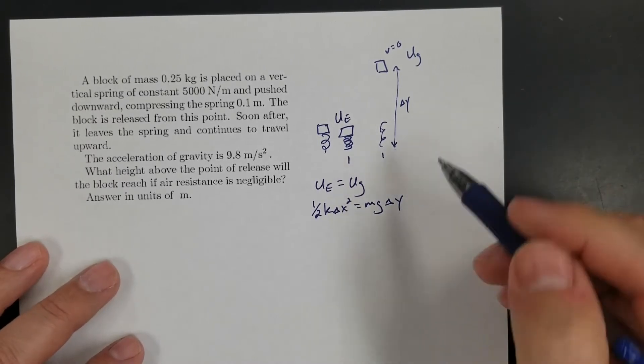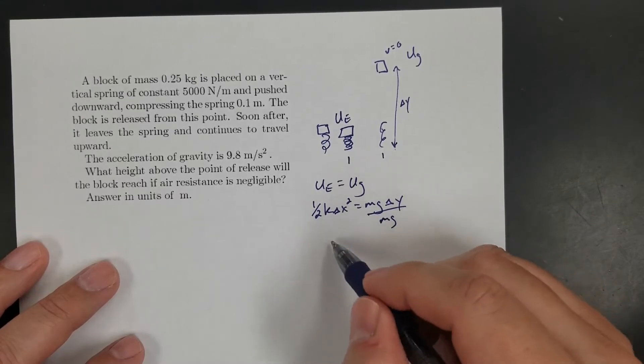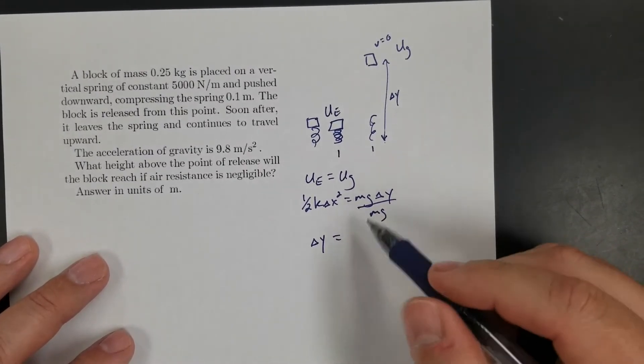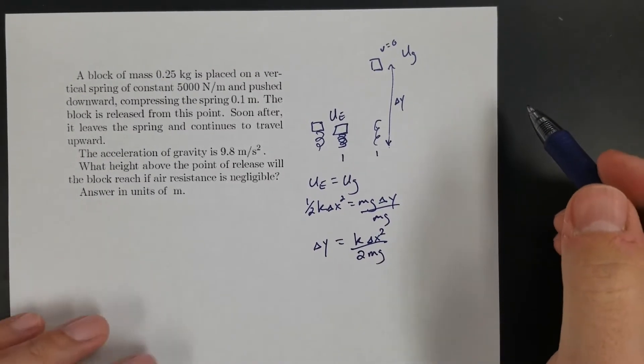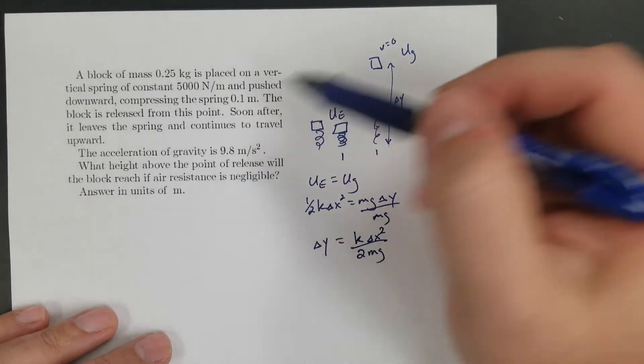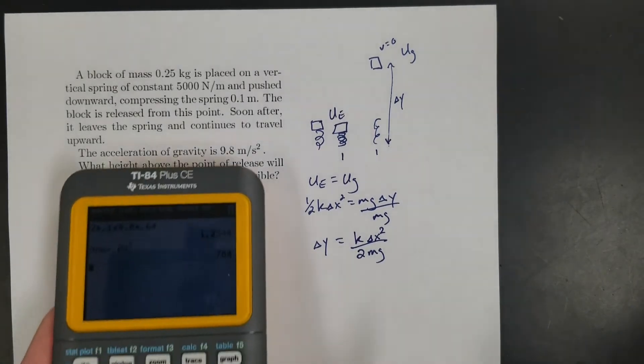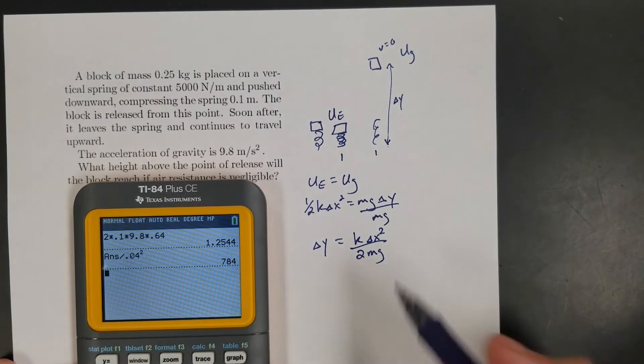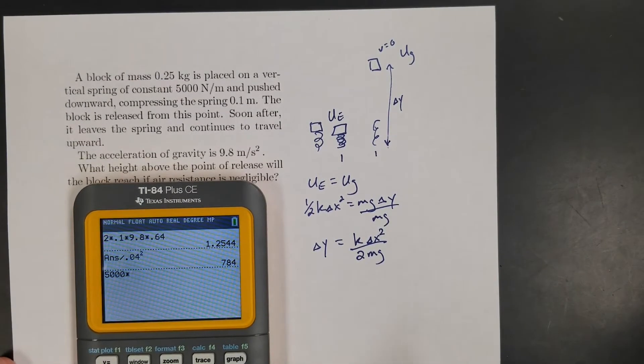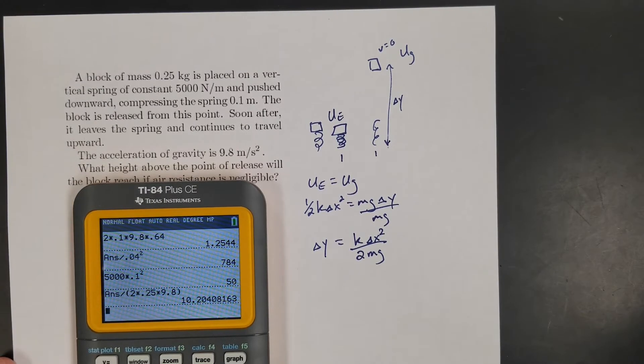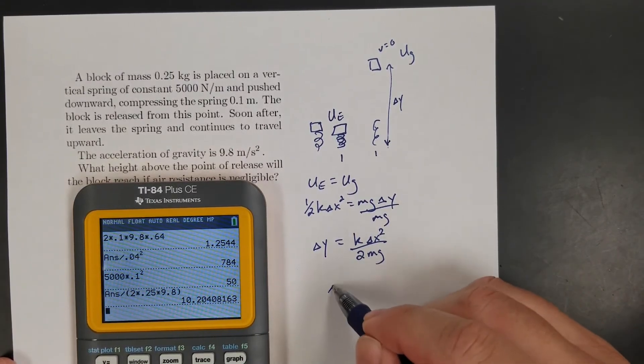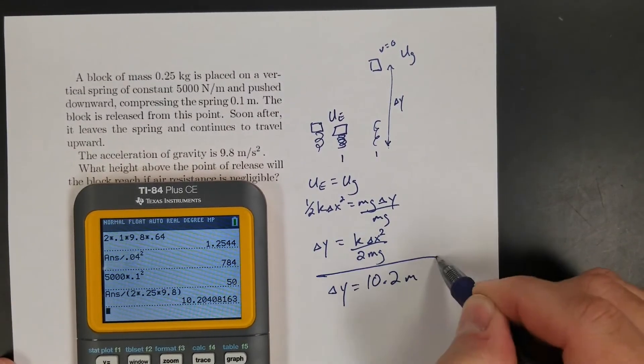I want to solve for the height, so I can just divide the mg over. So ∆y = k∆x²/2mg - I just took the half and moved the two to the denominator. Kilograms, newtons, meters - I don't have anything to convert. Nice! So k is 5,000 times - times, not divided - the stretch, so 0.1 squared, divided by 2 times the mass which is 0.25, times g which is 9.8. I get 10.204, so we'll call it 10.2. ∆y is 10.2 meters. Wow, that's fairly high!